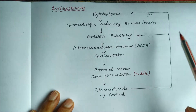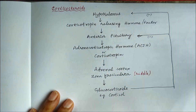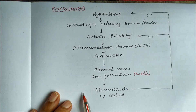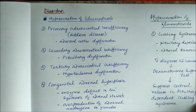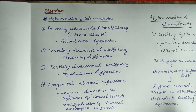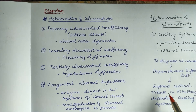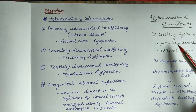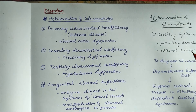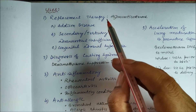When we give dexamethasone, it sends negative impulses to the anterior pituitary and hypothalamus, suppressing cortisol secretion. This is why it is called the dexamethasone suppression test. If Cushing's syndrome is pituitary dependent, dexamethasone will cause a decrease in plasma cortisol levels — suppression will occur. If there is no suppression, it indicates an adrenal tumor.